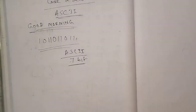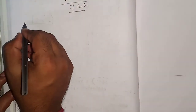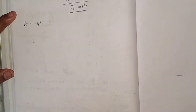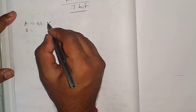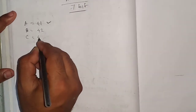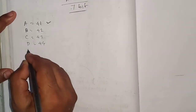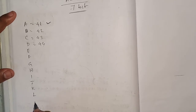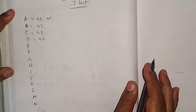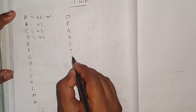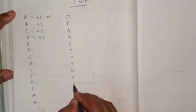What are the things you need to remember? First, remember the value of capital A. The value of capital A is equal to 41 in hexadecimal — that is 4, 1. So B is automatically 42, C is 43, D is 44, and so on: E, F, G, H, I, J, K, L, M, N, O, P, Q, R, S, T, U, V, W, X, Y, and Z.